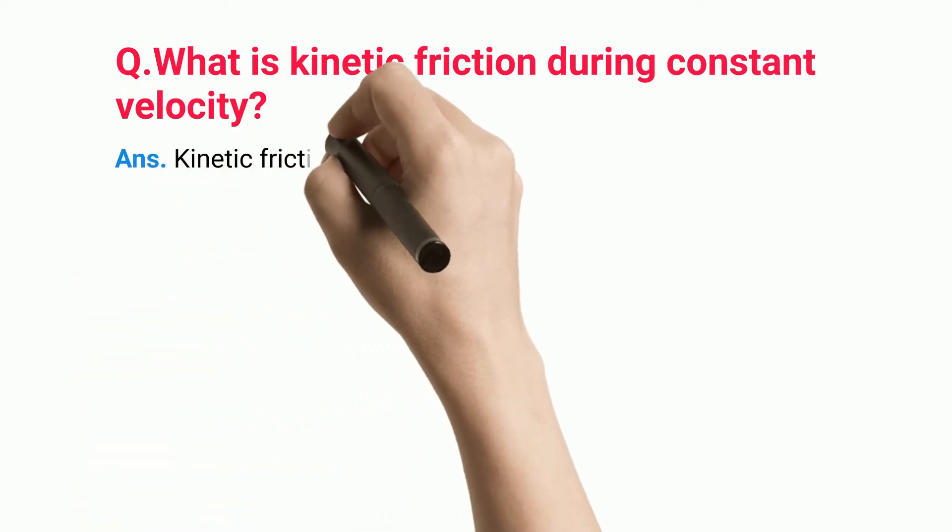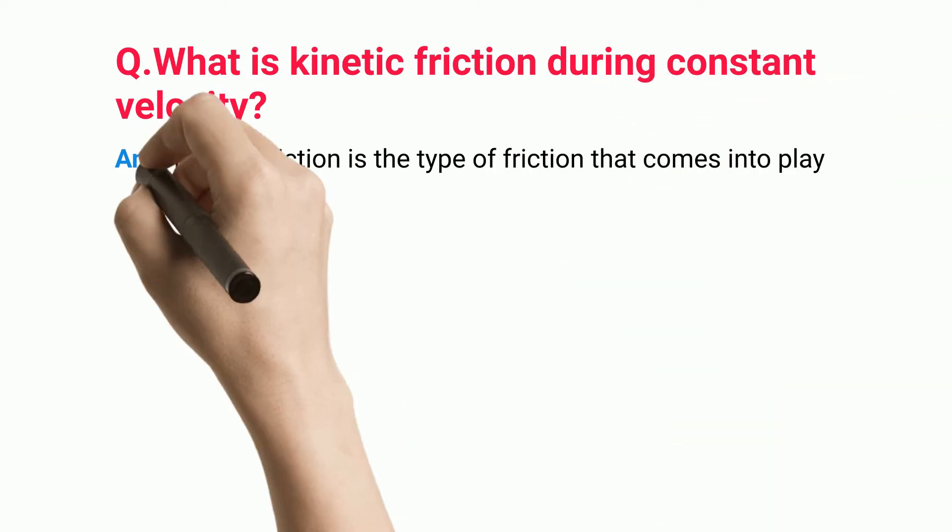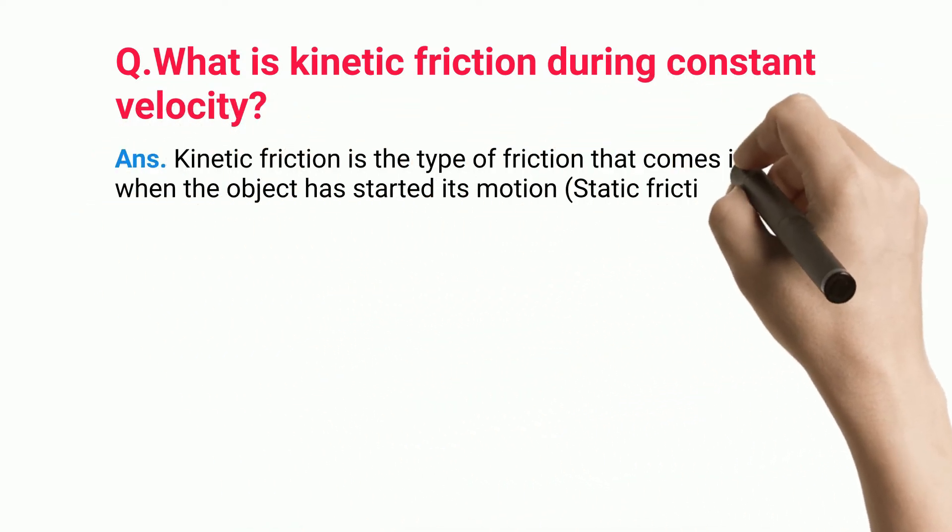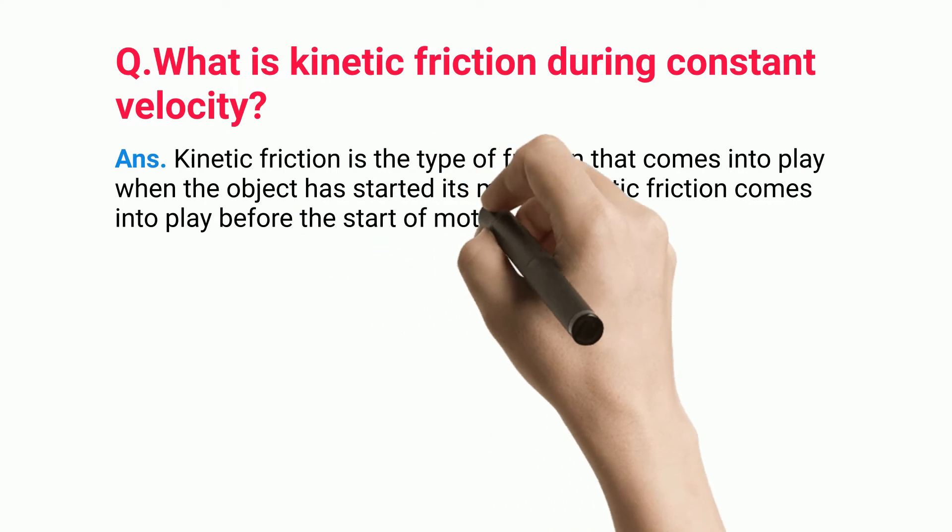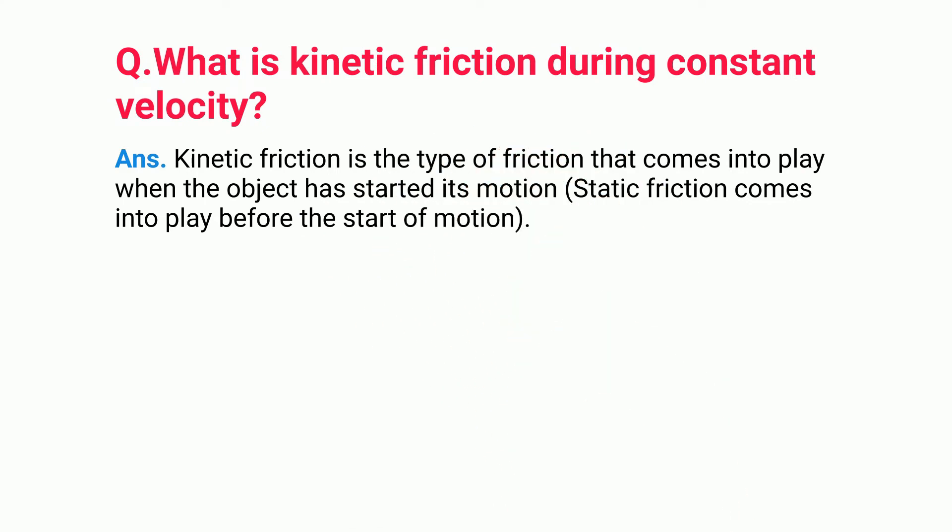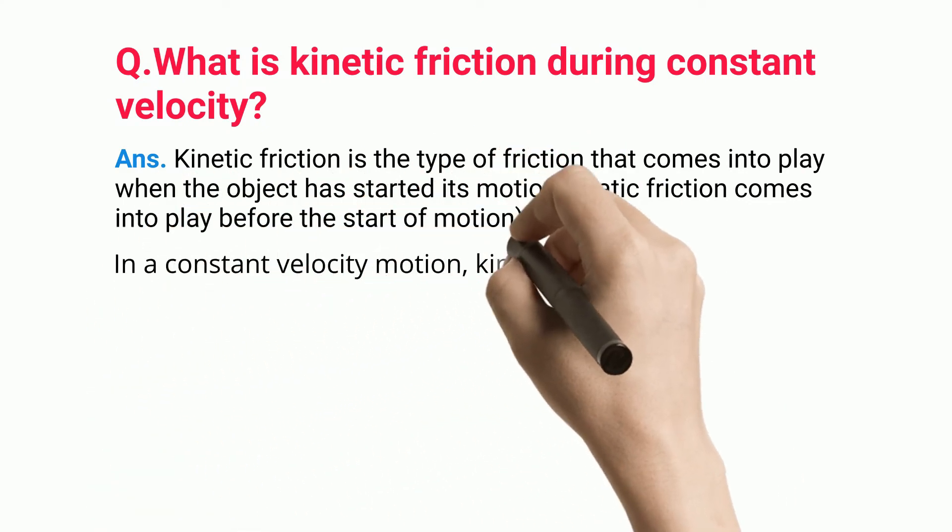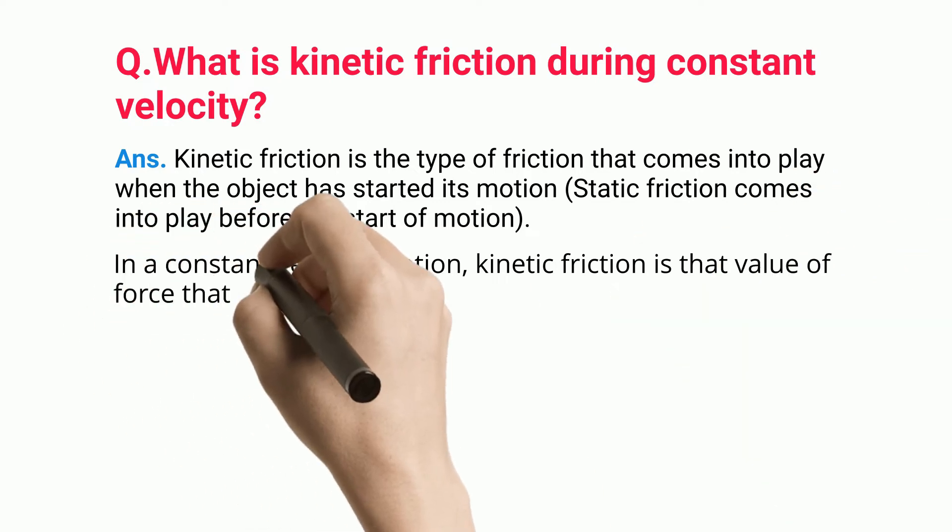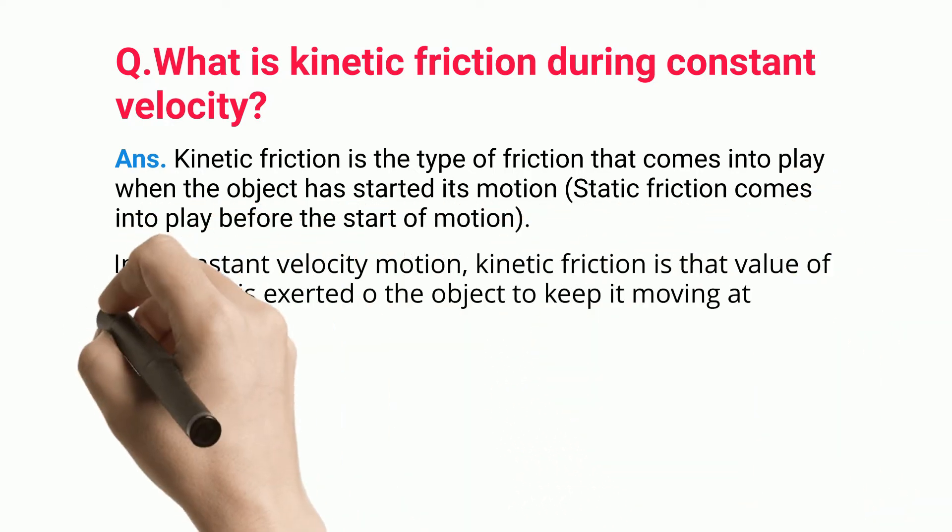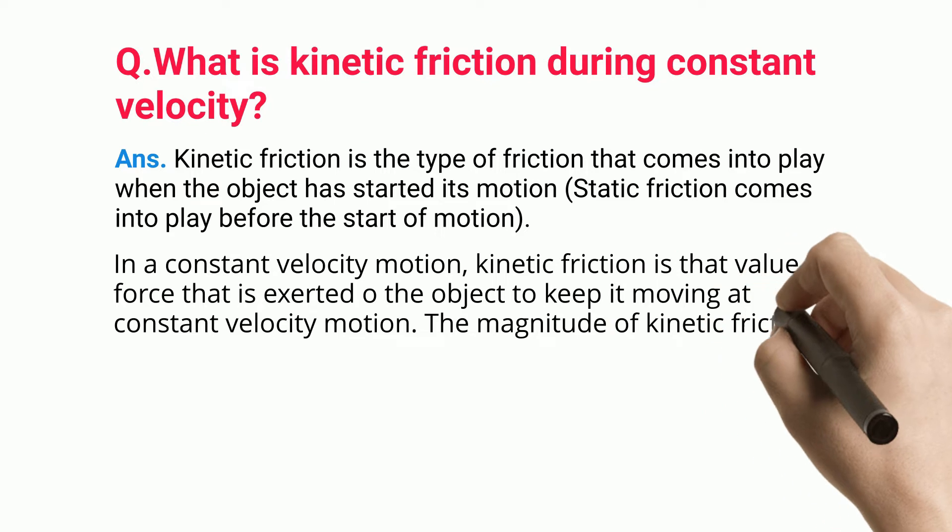What is kinetic friction during constant velocity? Kinetic friction is the type of friction that comes into play when the object has started its motion (static friction comes into play before the start of motion). In a constant velocity motion, kinetic friction is that value of force exerted on the object to keep it moving at constant velocity motion.